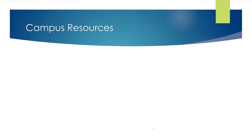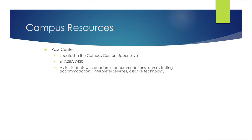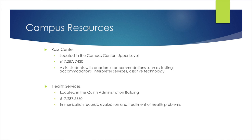Beyond Academic Support, there are many other offices and departments that support student success. The RWSSC is located in the Campus Center on the upper level near the Testing Center, and supports students who may have had accommodations in high school or at a previous college. Services include testing accommodations such as extended time or a separate testing location, interpretive services, and assistive technology. University Health Services, located in the Quinn Administration Building on the second floor, can assist students with immunization records and evaluation and treatment of health problems.